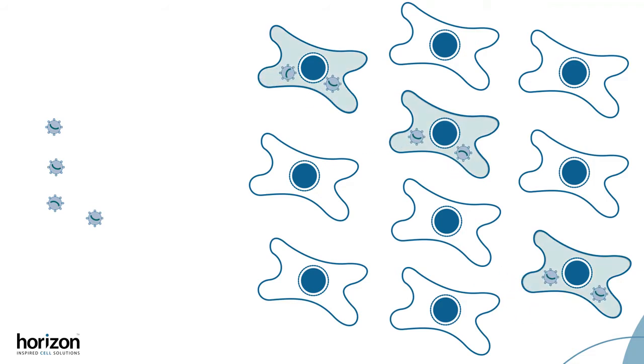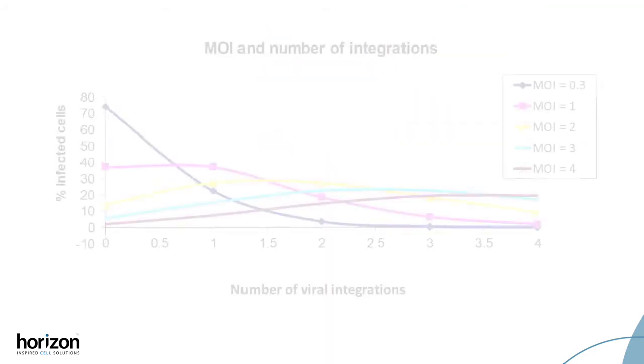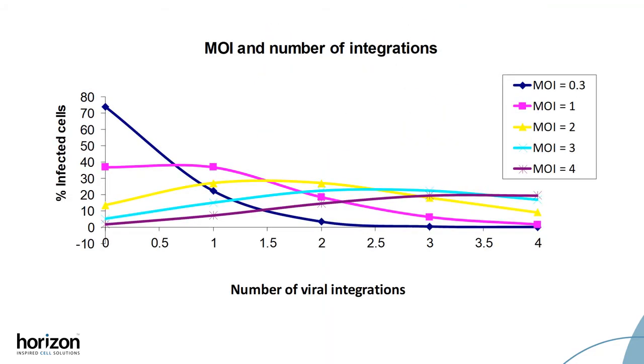Infection of cells ultimately depends upon the random collision between viral particles and cells. This random collision has been calculated and follows a Poisson distribution.